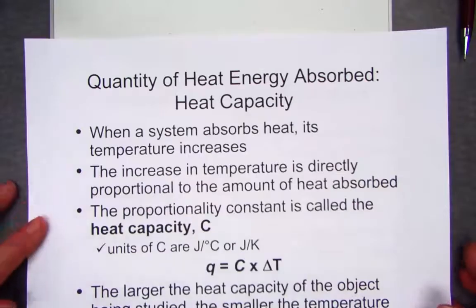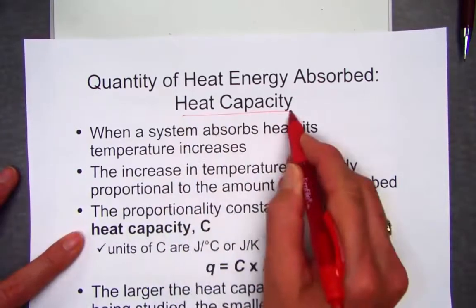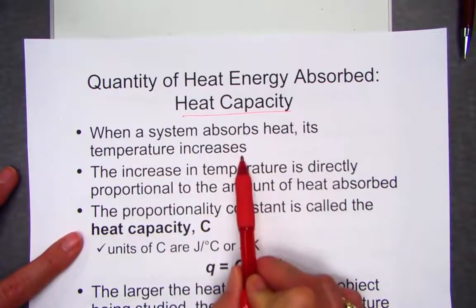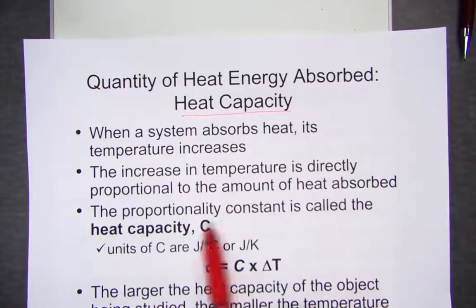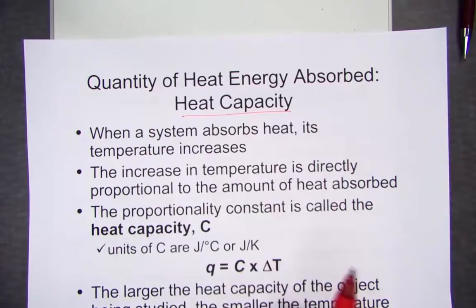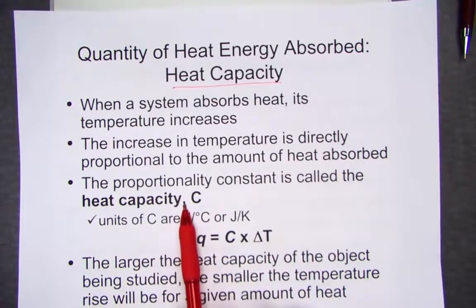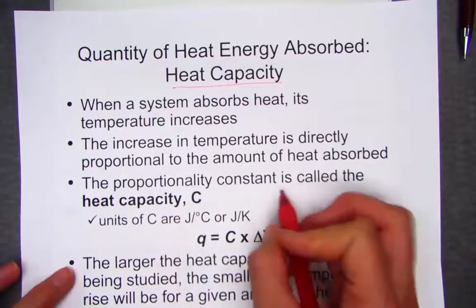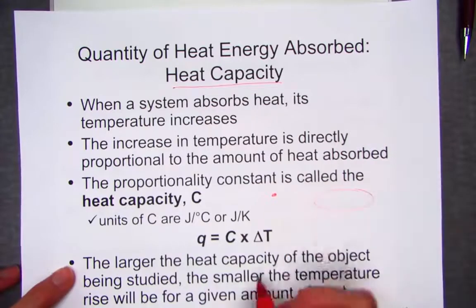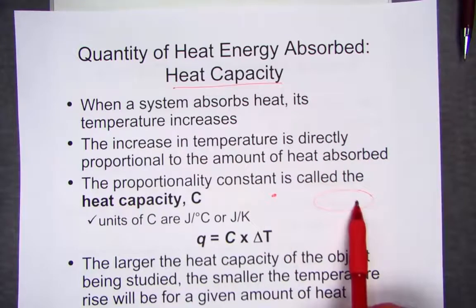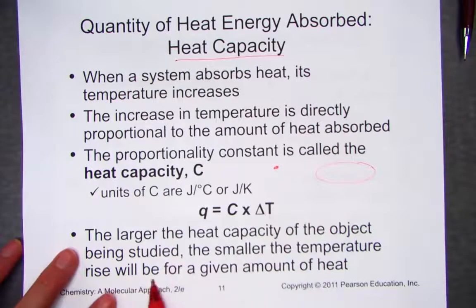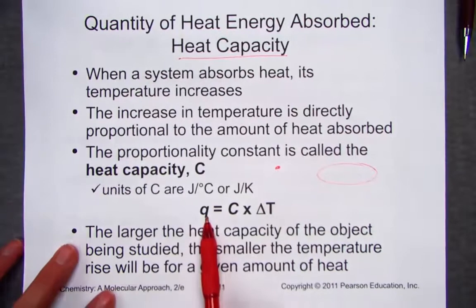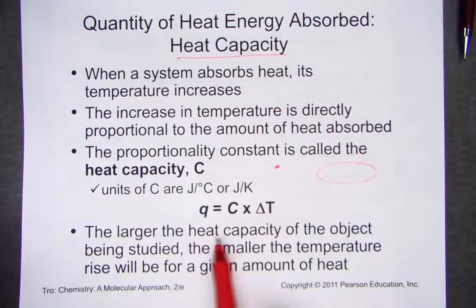The quantity of heat energy absorbed is defined as the heat capacity. When a system absorbs heat, its temperature increases, and that increase is directly proportional to the amount of heat absorbed. Heat capacity is a proportionality constant — how much energy does it take to warm up an object? The larger the heat capacity, the smaller the temperature rise for a given amount of heat. Water takes an incredible amount of heat energy to warm up, compared to a metal like copper or iron, which warms up very quickly.